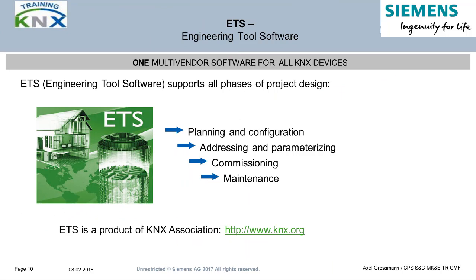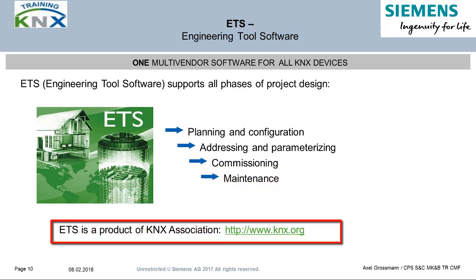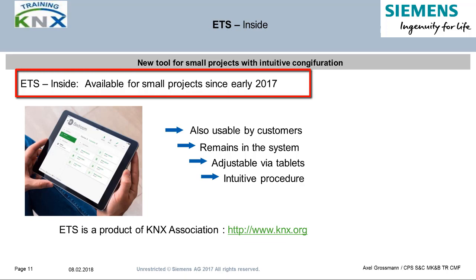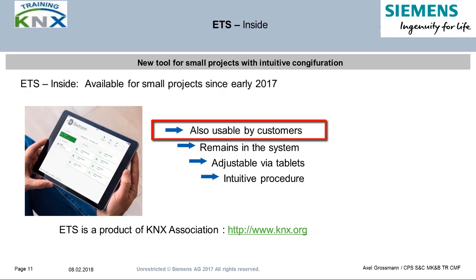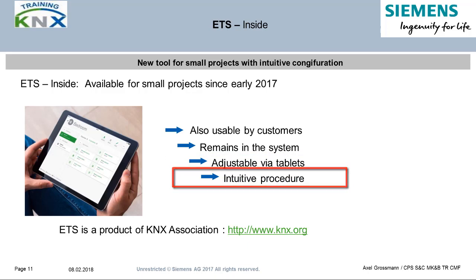Essential and as such a unique feature of KNX is the software tool ETS, Engineering Tool Software, shared by all manufacturers. This tool supports all phases of a KNX project, starting with planning and configuration of addressing and parameterization and commissioning, and finally the maintenance during normal plant operation. The ETS is a manufacturer-independent tool developed and marketed by the KNX Association. Since the beginning of 2017, there is an additional development, the ETS Insight. The fundamental principle is a simple configuration which can be further processed by the end customer after preparation by an installer. For the first time, a KNX project can be configured with a tablet. The ETS Insight was developed especially for small projects, which can be finalized quickly by an intuitive procedure.